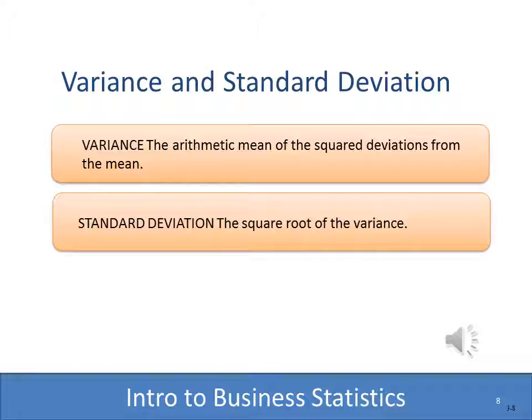Now we come to two of the most commonly used measures of dispersion: variance and standard deviation. The variance is the arithmetic mean of the squared deviations from the mean — we look at each value and how far it is from the mean of the entire sample. The standard deviation is very easy: once we have the variance, it's simply the square root of the variance. We'll step you through that in the next couple of slides.